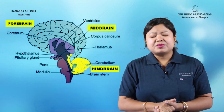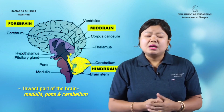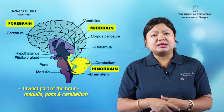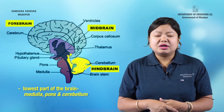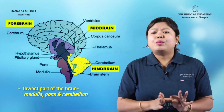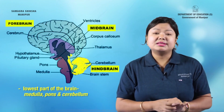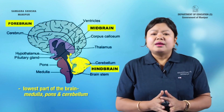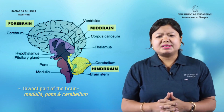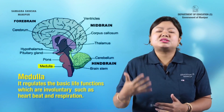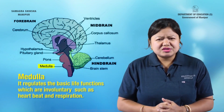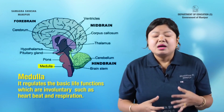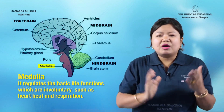Next is the hindbrain. The hindbrain consists of the medulla oblongata, pons, and cerebellum. The medulla regulates basic functions of life such as heartbeat and respiration — it is the regulator of involuntary actions.